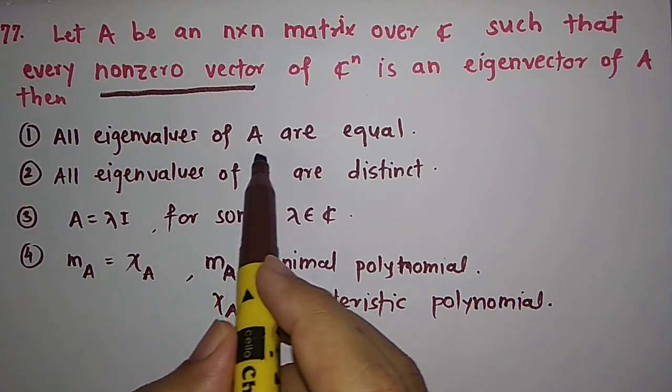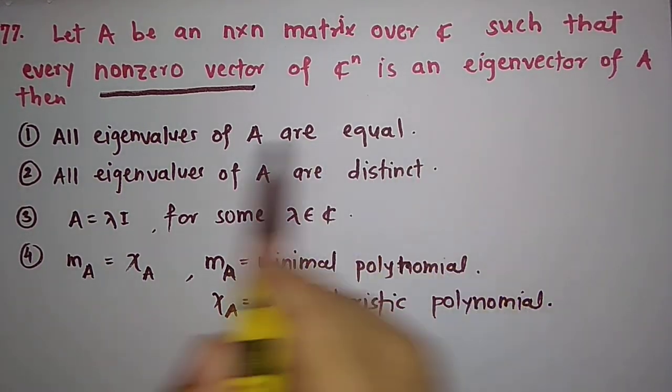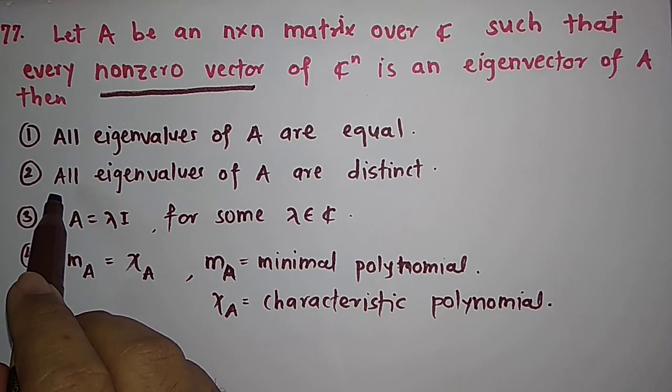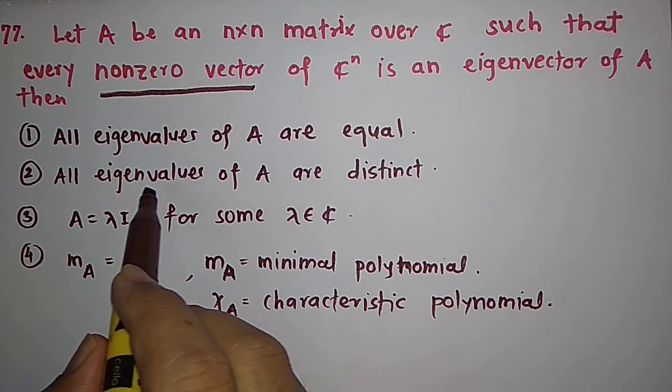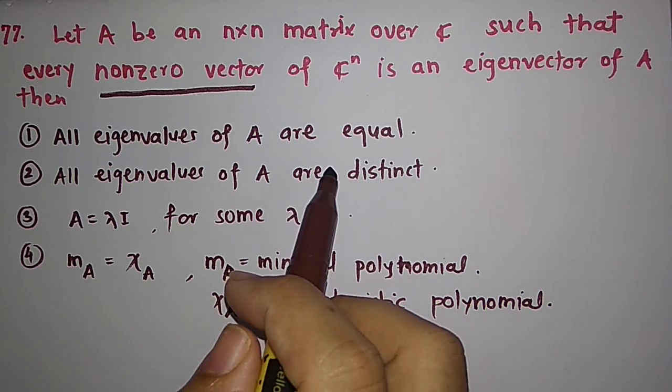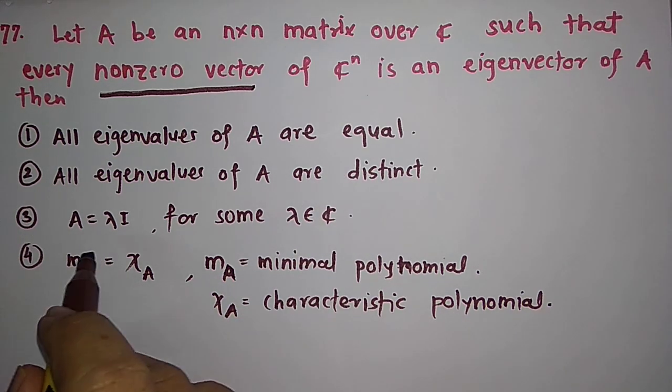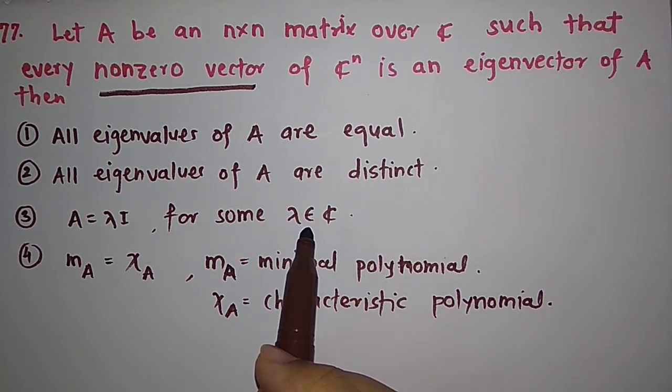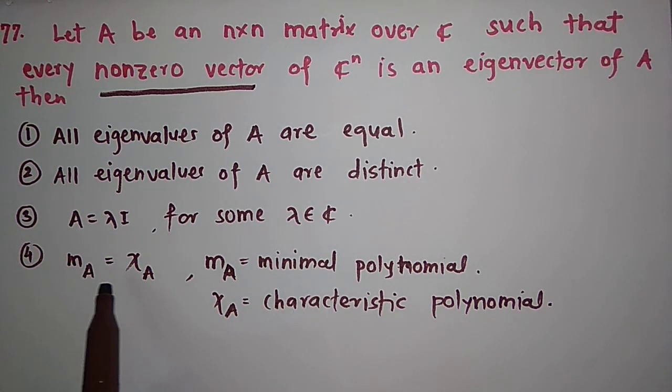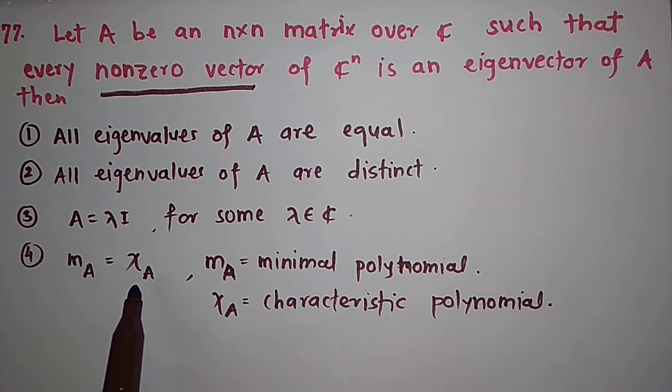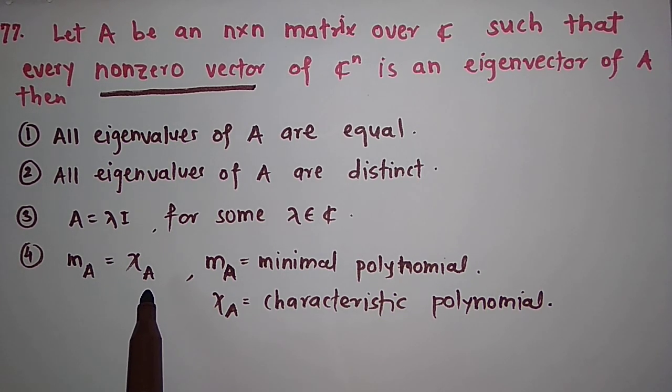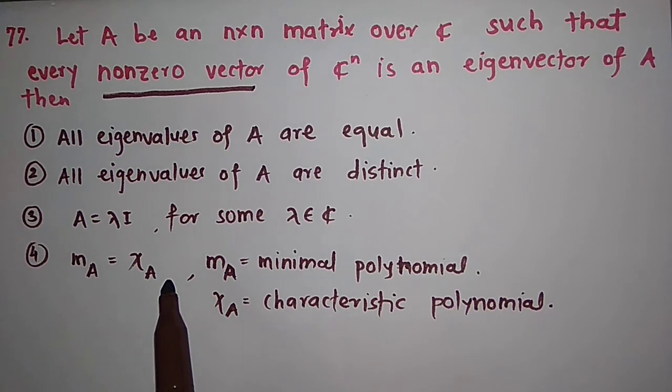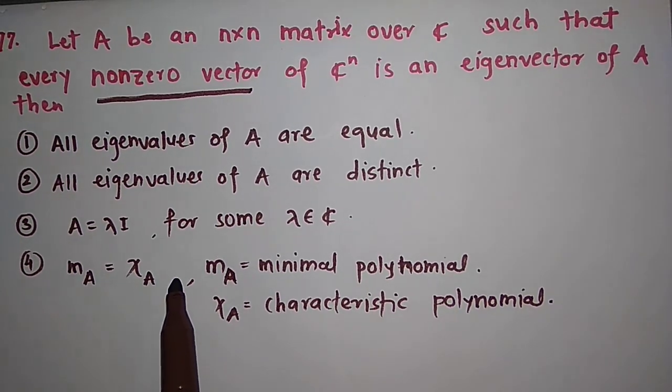The first option says that all eigenvalues of A are equal. The second option says that all eigenvalues of A are distinct. The third option says that A is equal to λI for some λ belongs to C. The fourth option says that the minimal polynomial of A is same as the characteristic polynomial of A. So let us solve this.